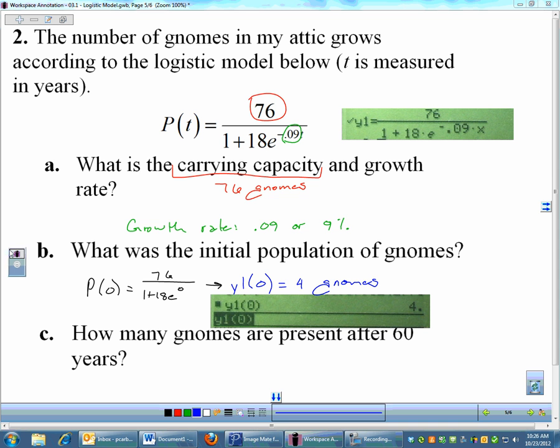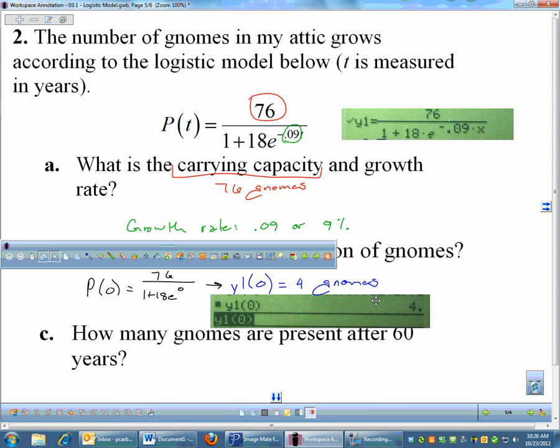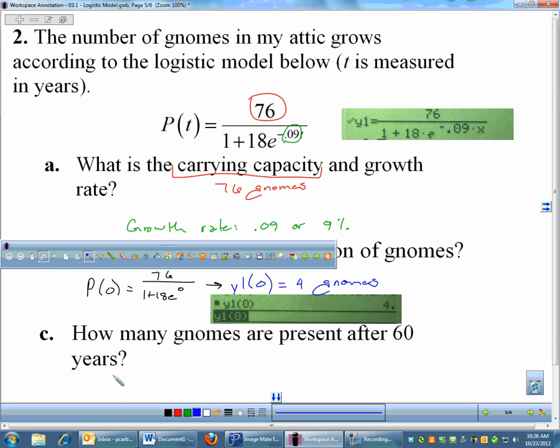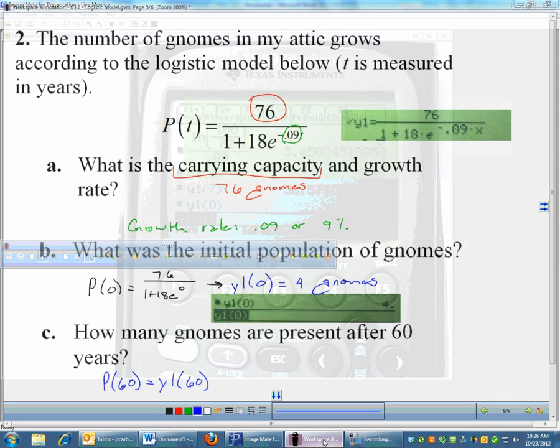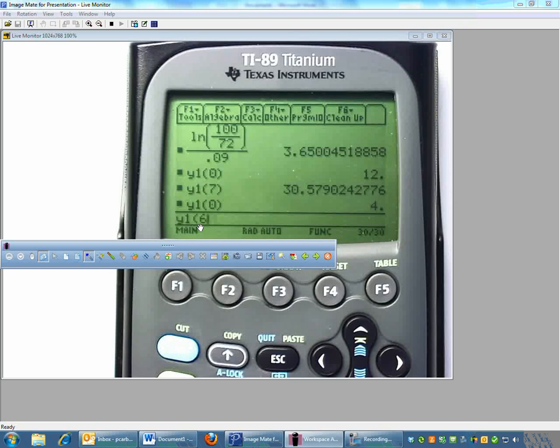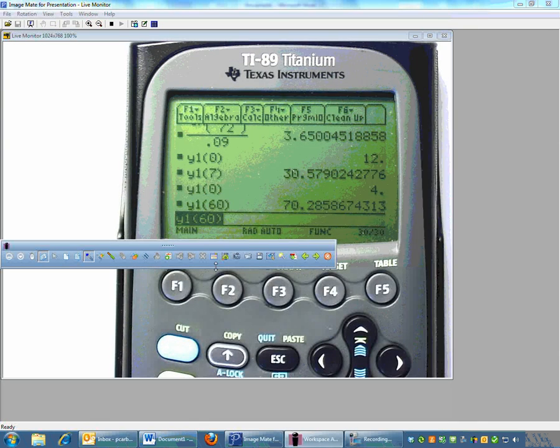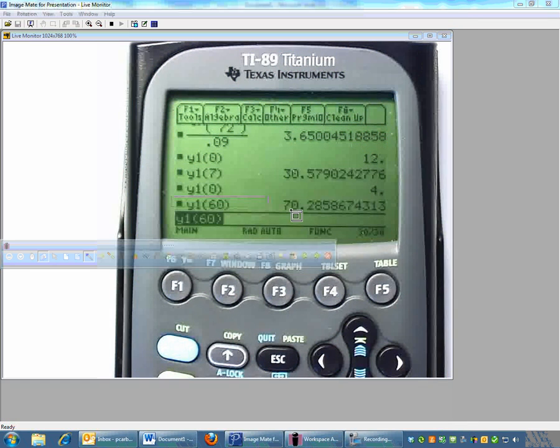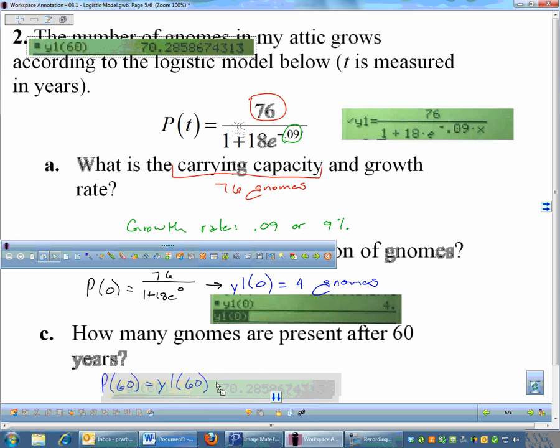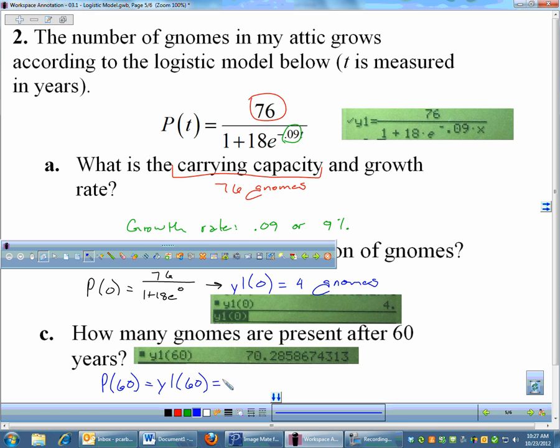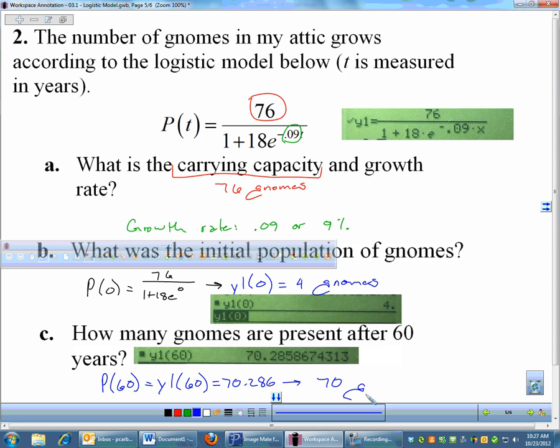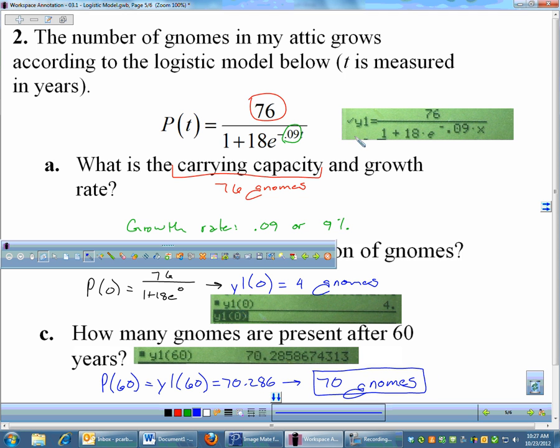How many gnomes are present after 60 years? So 60 years, T is measured in years. Always be aware of your units. For this one, 60 years, that's going to be P of 60, which in my calculator is going to be Y1 of 60. So again, I'll go to my calculator and punch that in. Y1 of 60, and we get that answer. I've got 70.286. But remember, we are talking about living creatures here. Gnomes are real, don't make fun of me. We have 70 gnomes.